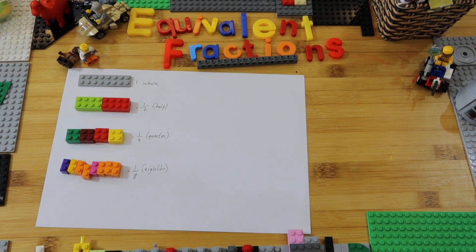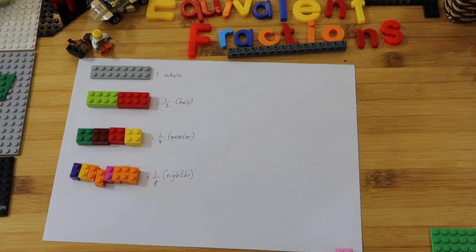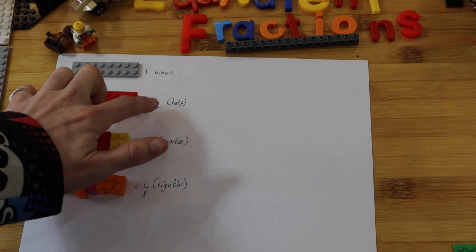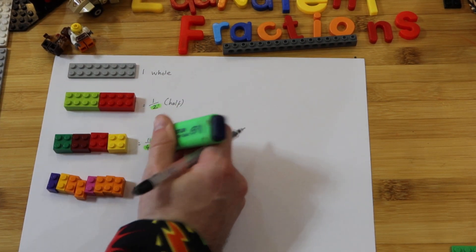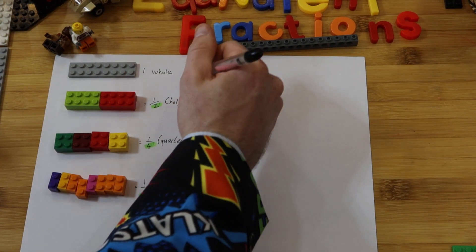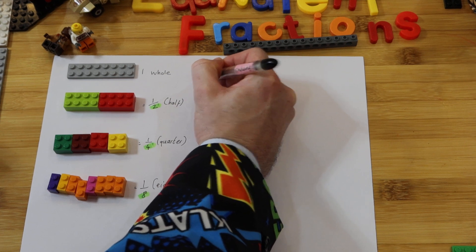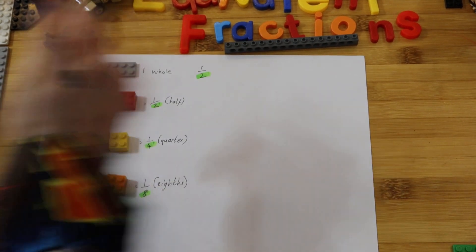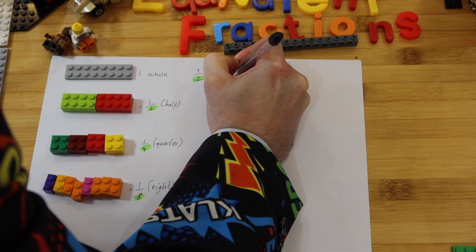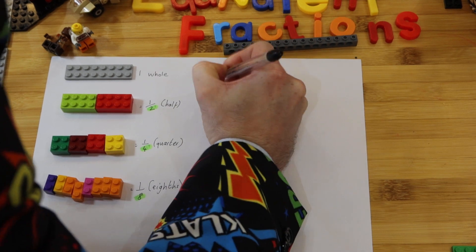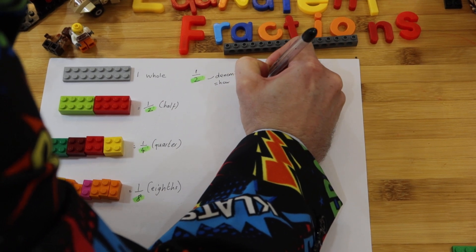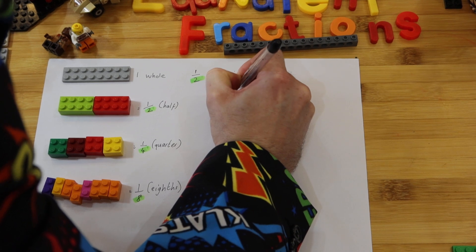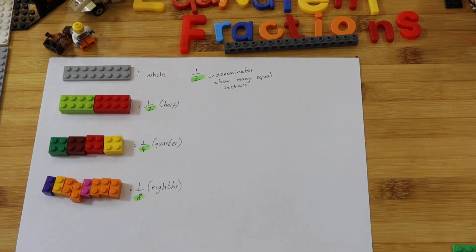So hopefully you can understand and see that. Now the denominator is very, very important. So let's have a look at that. I'm going to highlight the denominators. The denominator is basically how many equal parts it's been cut into. How many equal sections — as simple as that, how many pieces has it been cut up into — and the most important word is equal.